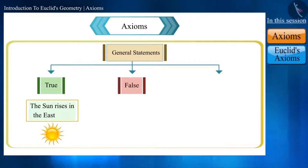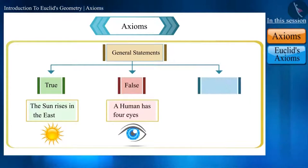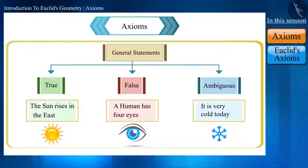And the other, which is always false, such as a human has four eyes. And the third one, ambiguous, that is a sentence that depends upon something, such as this statement: It is very cold today. It is possible that there may be someone who is not feeling cold or maybe at some place where it is not cold. Therefore, this statement cannot be classified as true or false.